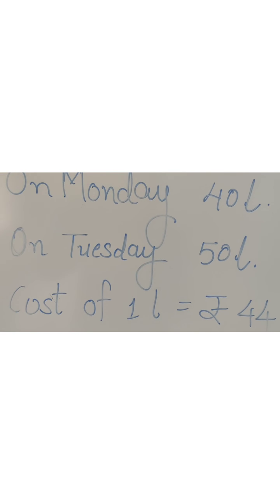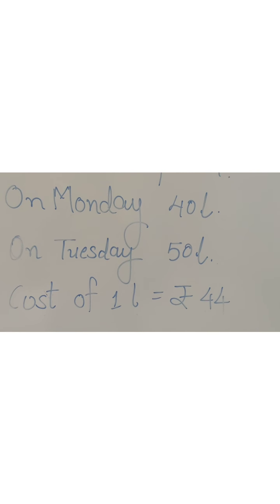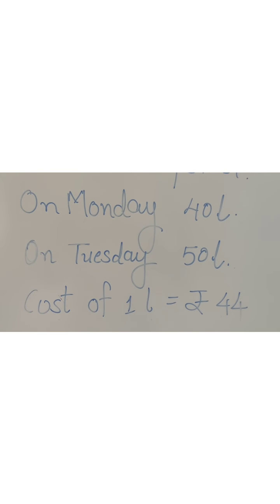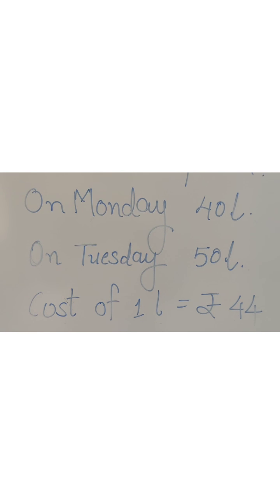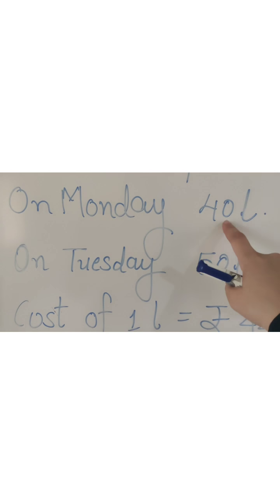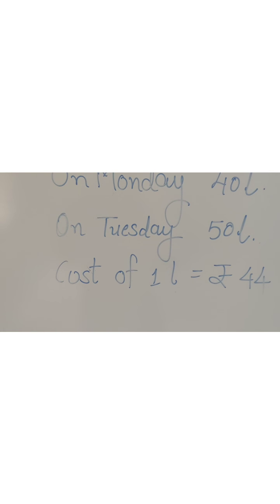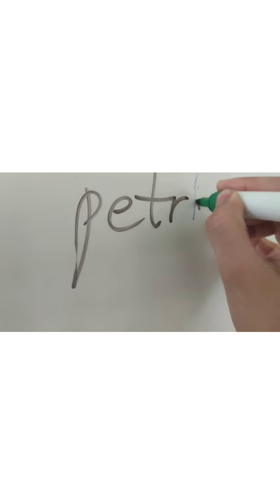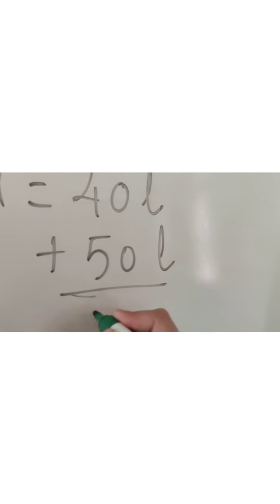On Monday, 40 litres; on Tuesday, 50 litres; cost of 1 litre is ₹44. First, we need to find out the total petrol filled on both days. So: total petrol filled = 40 litres + 50 litres = 90 litres.